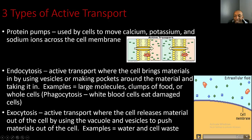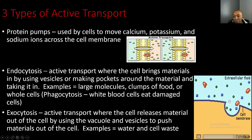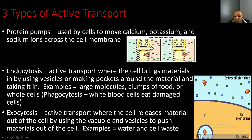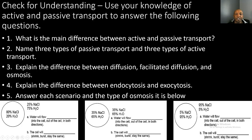Here are visual examples: the cell brings in materials using vesicles or pockets — that's endocytosis — and those vesicles push out water and cellular waste — that's exocytosis. The pockets form around large materials such as large clumps of food or large molecules, and water and cell waste are pushed out.